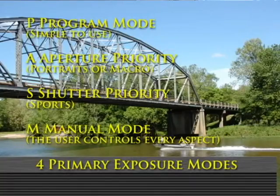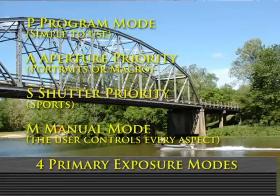The advantages of each: program mode is simple to use; aperture priority is great for portraits or macro because you can control depth of field; shutter priority is ideal for sports; and manual mode is the most creative option. Take your camera off program mode and put it on aperture or shutter priority — or if you're feeling brave, put it on manual, learn to read your light meter, and have a lot of fun.